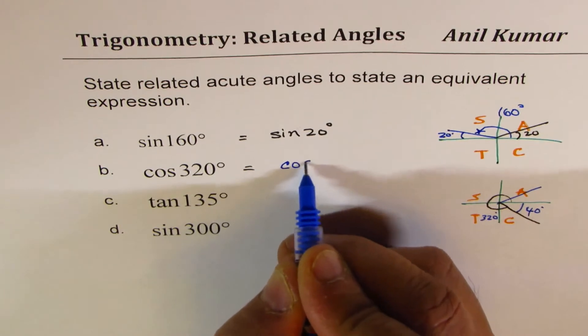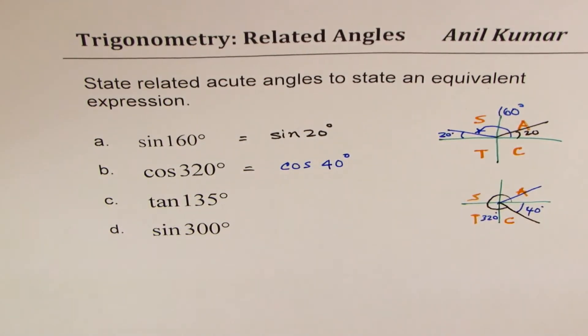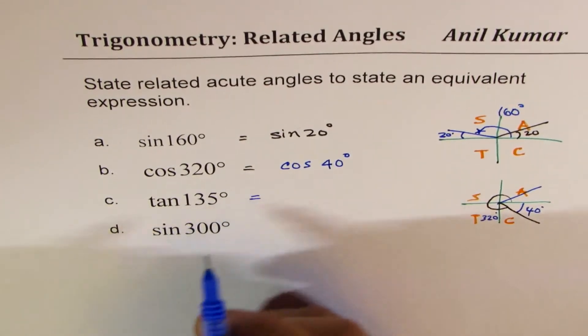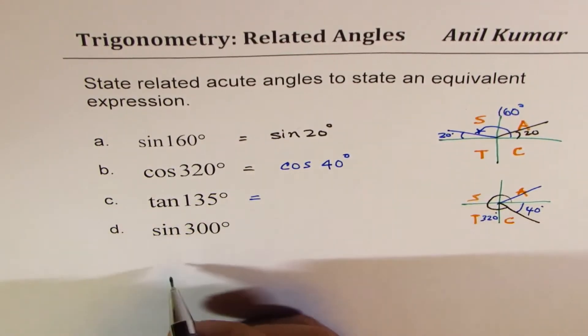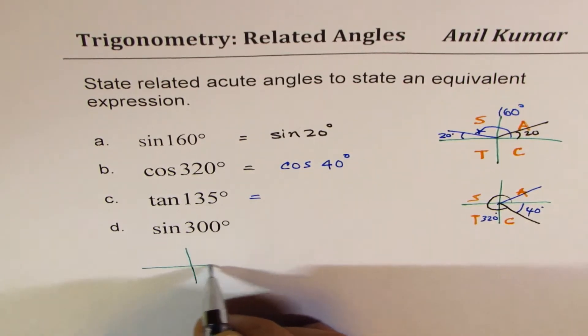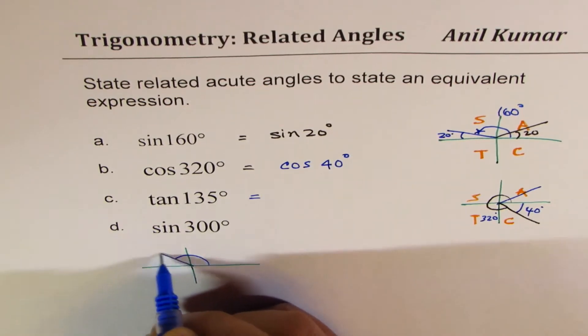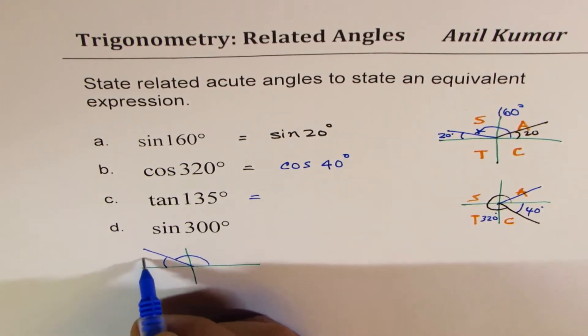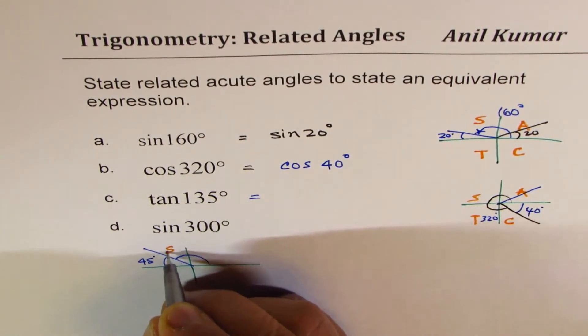And therefore this could be written as cos of 40 degrees. Do you see that? That is how it should be answered. Now the next one here is tan 135 degrees. Now tan 135 degrees, let me draw here, will be in quadrant 2 with the related acute angle of 45 degrees.